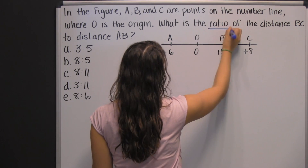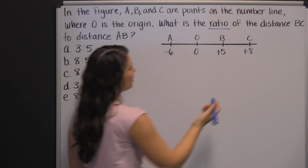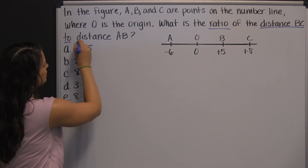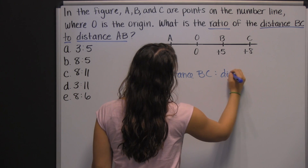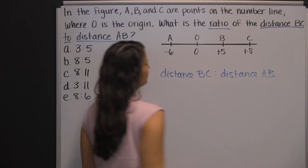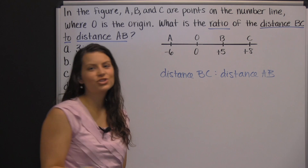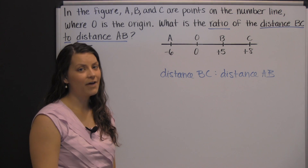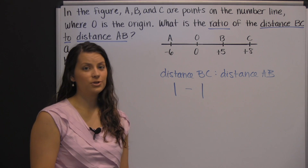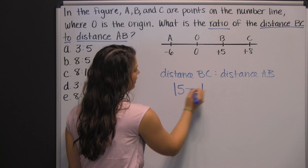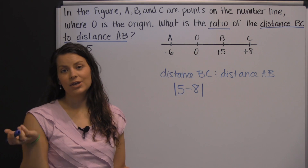Ratios can be in many different forms — you can see the answer choices and how they're set up, so we'll set up our ratio the same way: distance BC to distance AB. For the distance from B to C, you can probably just count it on the number line. The distance between five and eight is three. But there is a mathematical way of finding the distance between two points: find the absolute value of the difference of the two points. For B and C, that would be the absolute value of five minus eight, or the absolute value of eight minus five — either way, you'll get the same answer.